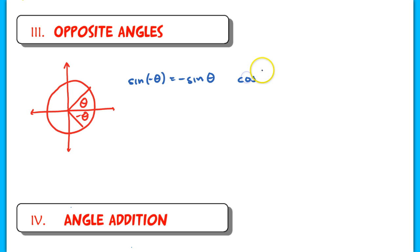Now if I look at the cosine of negative theta, the cosine of negative theta is the same as the cosine of theta. So here are the two opposite angle identities.